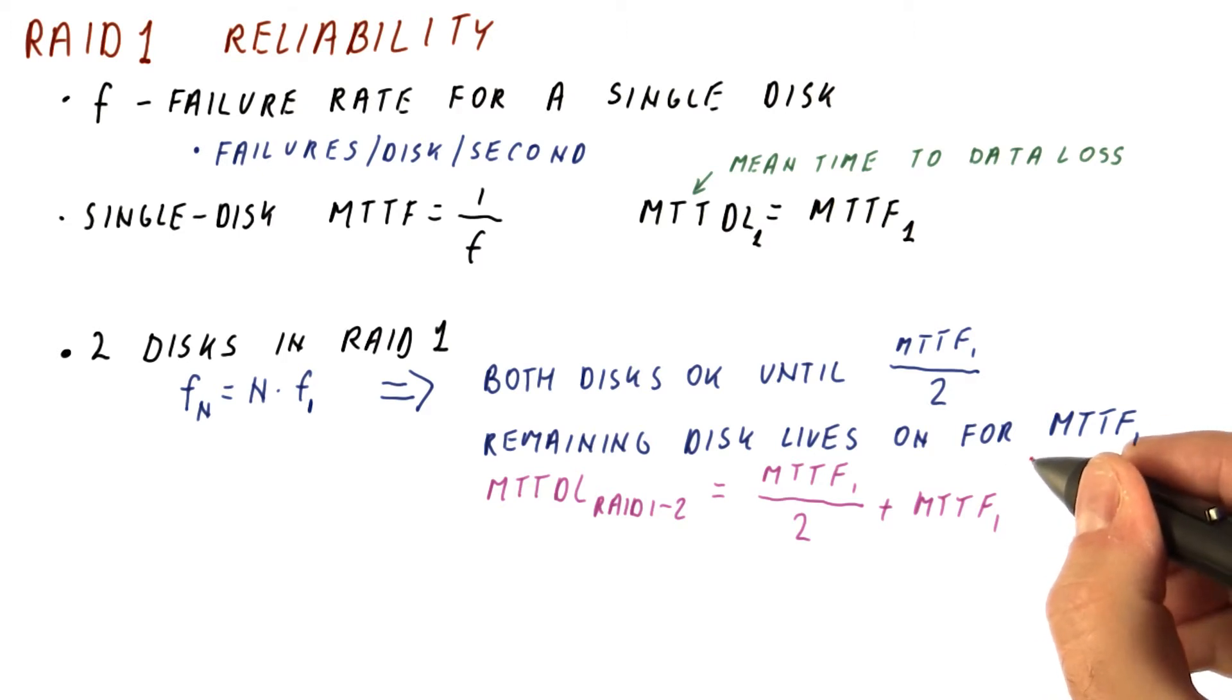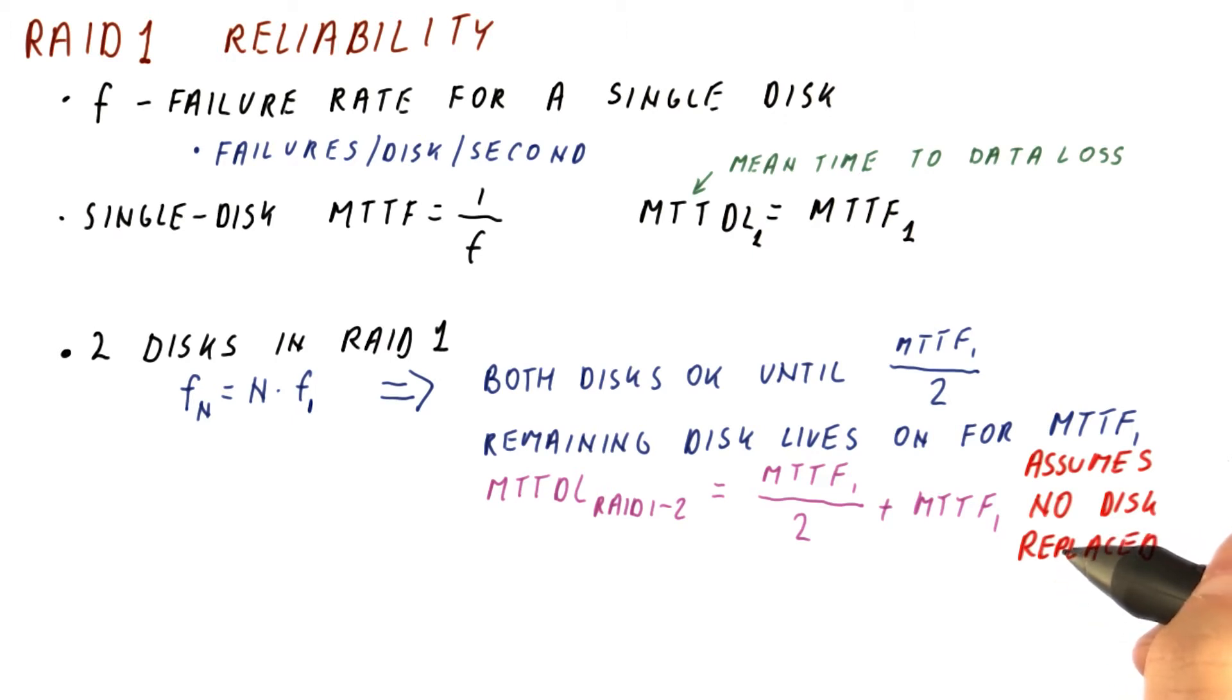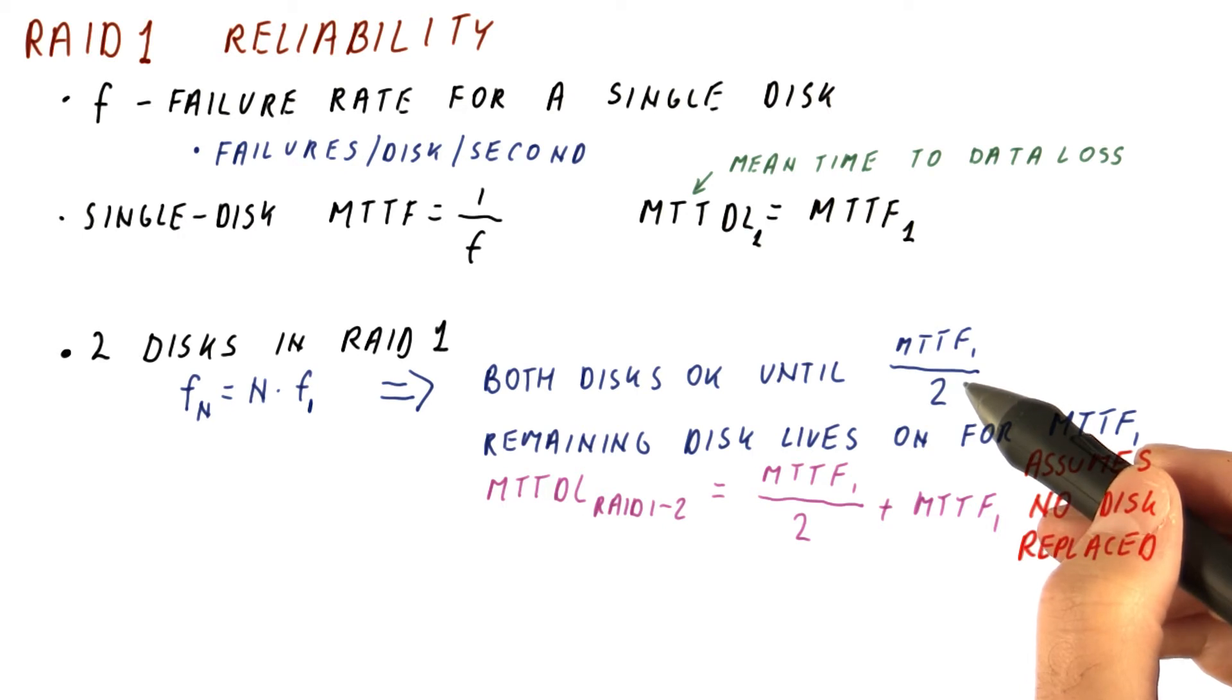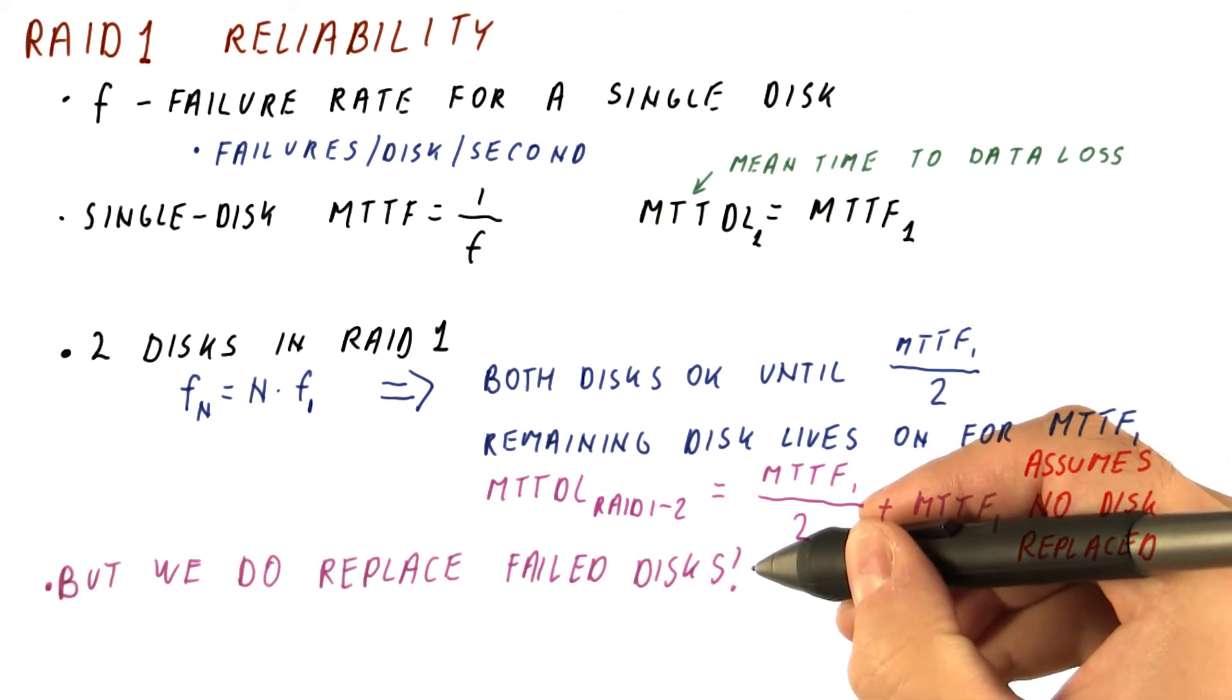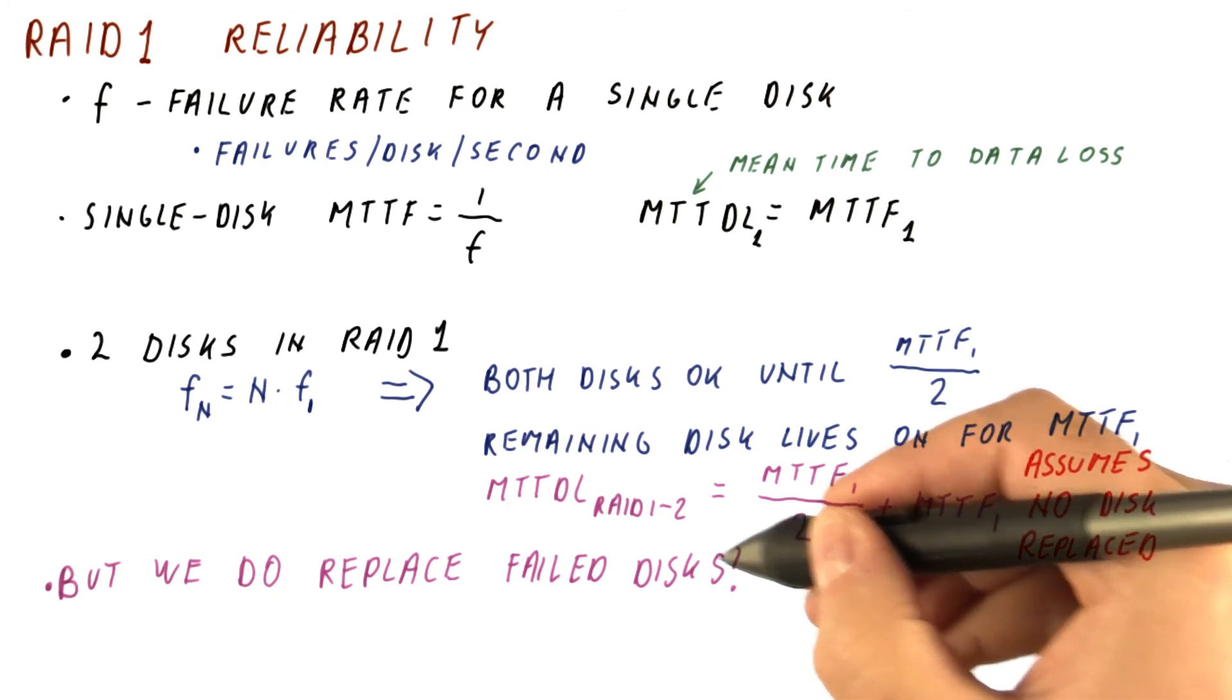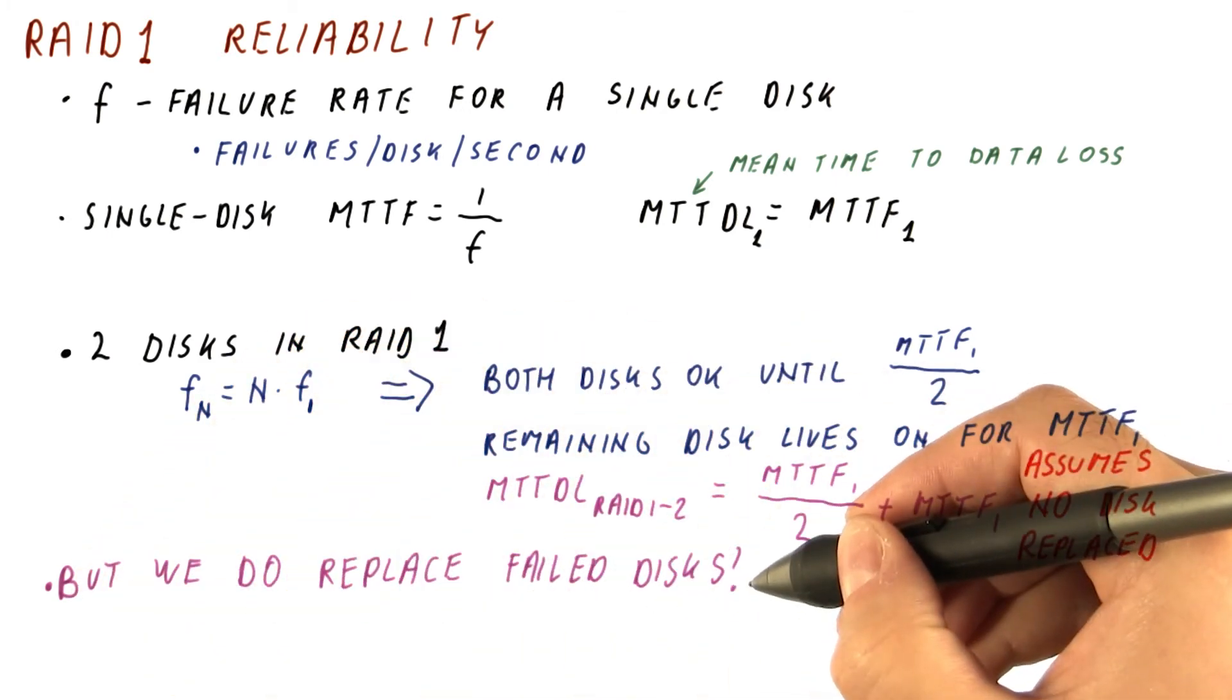The point is that this calculation assumes that no disk is replaced at the time when it fails. So we had a failure, and we just let that failed disk be there. And we were down to one disk and didn't fix it. And then we just were down to the MTTF of one disk for a while.